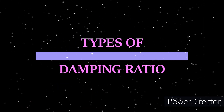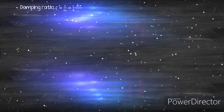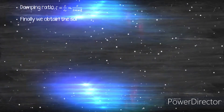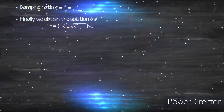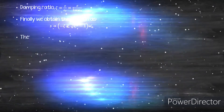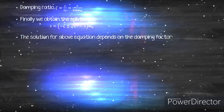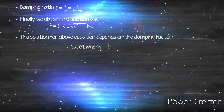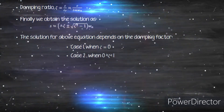There are four types of damping ratio in the viscous damping system. The damping ratio, zeta (ζ), equals c/cr or c/(2mωn). The solution depends on the damping factor: Case 1, ζ = 0 (undamped); Case 2, 0 < ζ < 1 (underdamped); Case 3, ζ = 1 (critically damped); Case 4, ζ > 1 (overdamped).